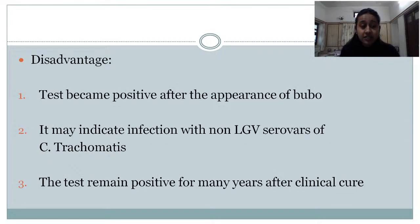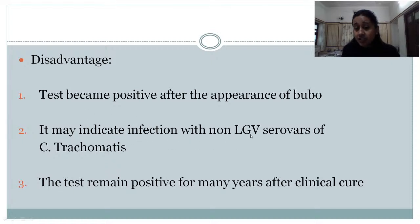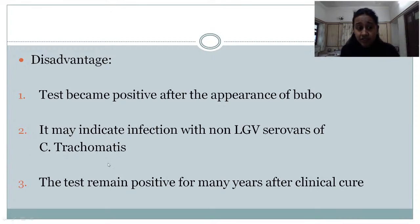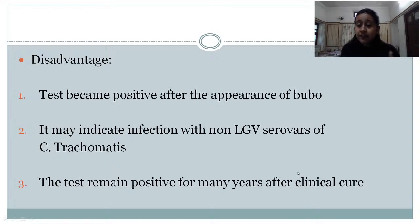Disadvantages of Frei's test: The test becomes positive only after the appearance of bubo, which can take 8 to 80 days — so it is not an early test. It can also be positive in other chlamydial infections of non-LGV serovars, for example Chlamydia trachomatis. Additionally, the test remains positive for many years after clinical cure, so it does not indicate acute infection.